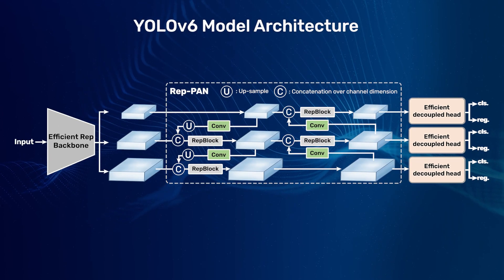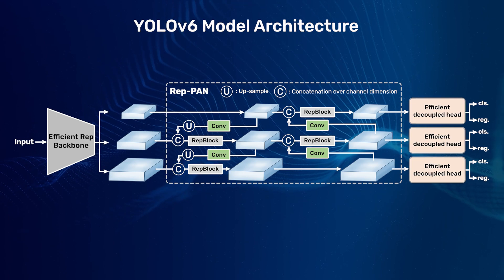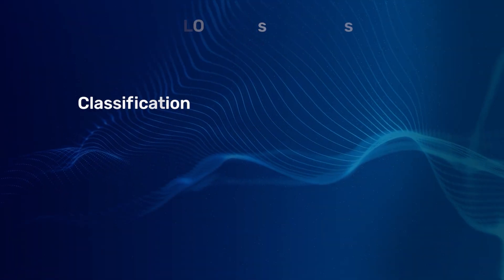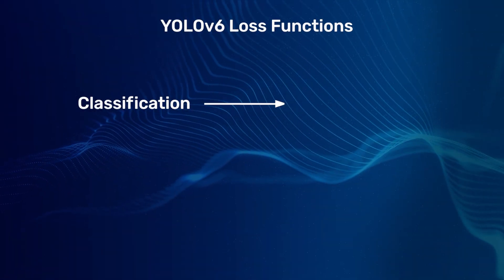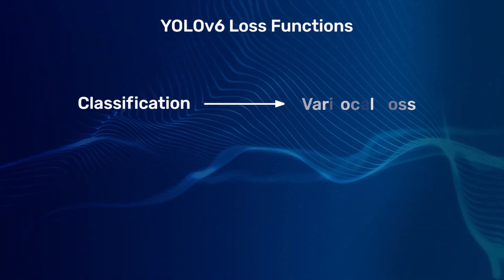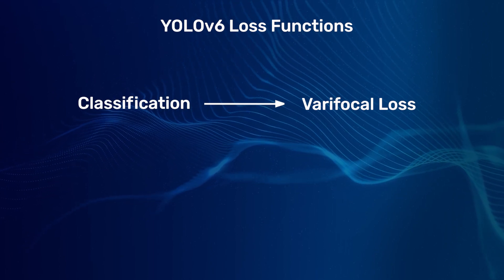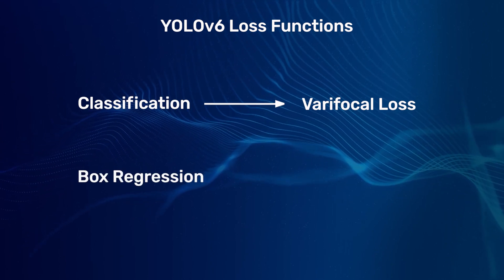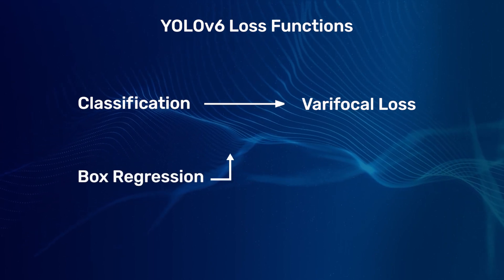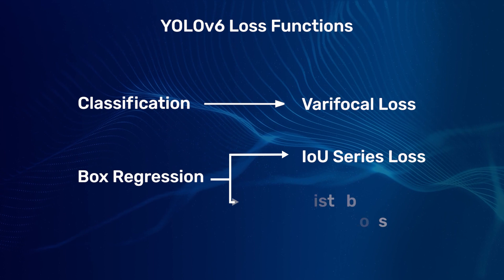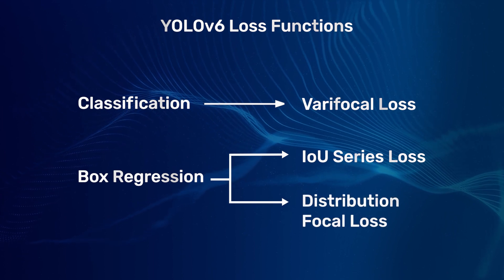During training, YOLO v6 uses varifocal loss for classification. For box regression, it uses IOU series loss and distribution focal loss.